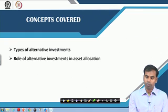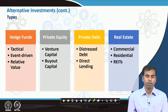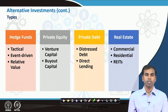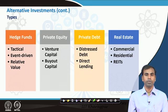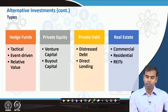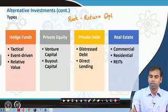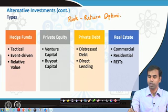Continuing that discussion, we would like to know more about the role of alternative investment in portfolio allocation strategy. We have already discussed different types of alternative investments. If you recall, we discussed hedge funds as alternative investment — in terms of modern alternative investments, hedge funds could be tactical, event-driven, or relative value hedge funds. These are different types of hedge funds available for investment, and depending on your risk-return choice you can invest in either of these.